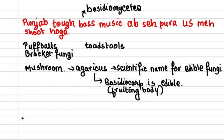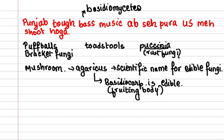Then comes PURA — PU is for Puccinia and RA stands for rust fungi, which causes wheat rust. The full name of the fungus that causes wheat rust is Puccinia graminis tritici, as we have studied earlier.